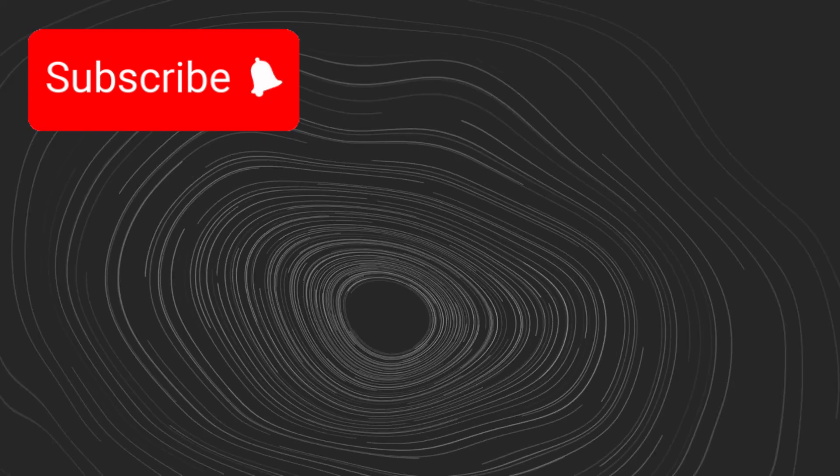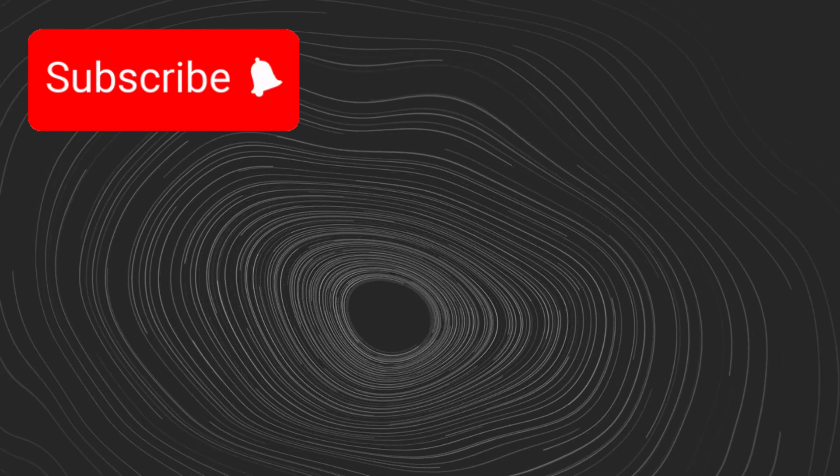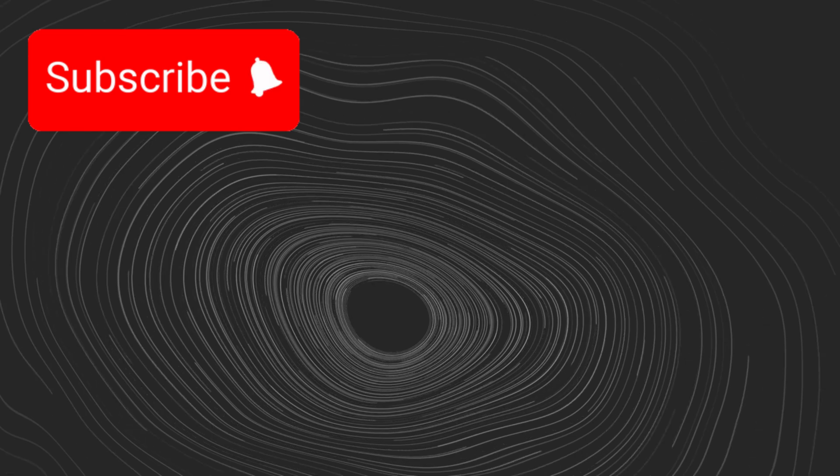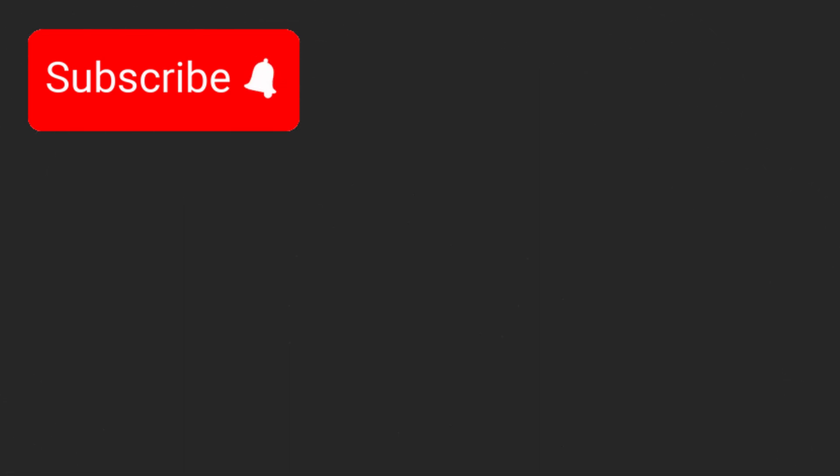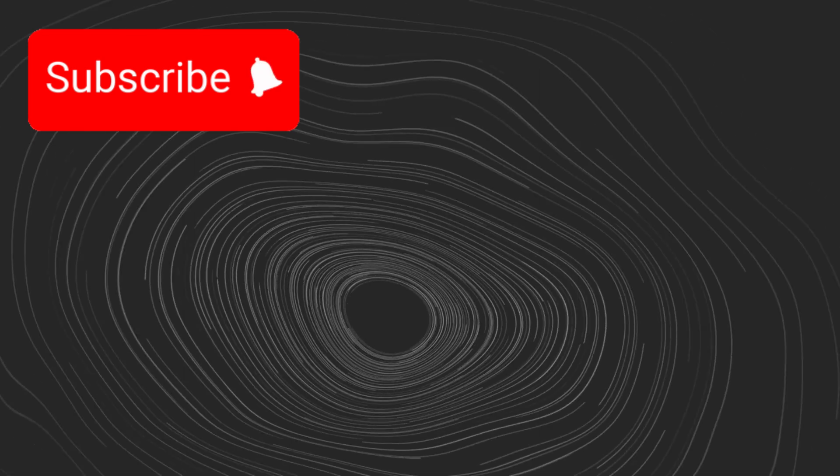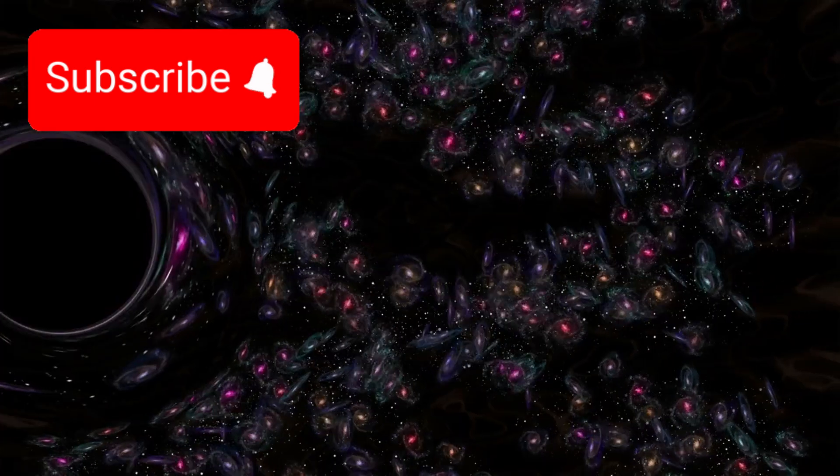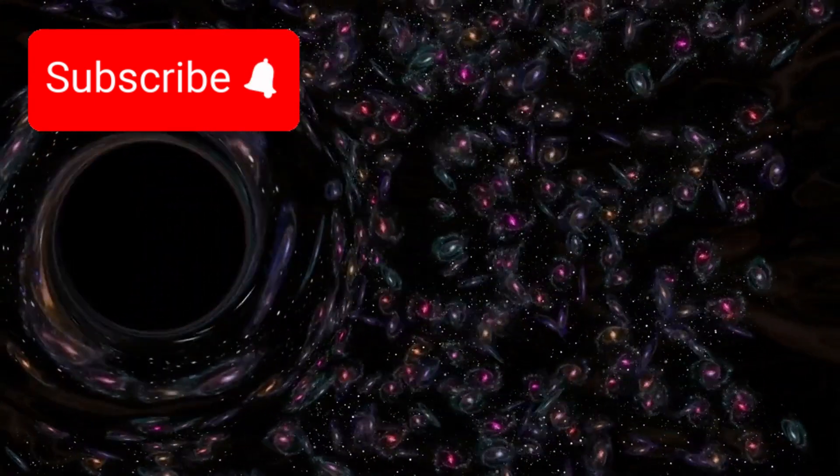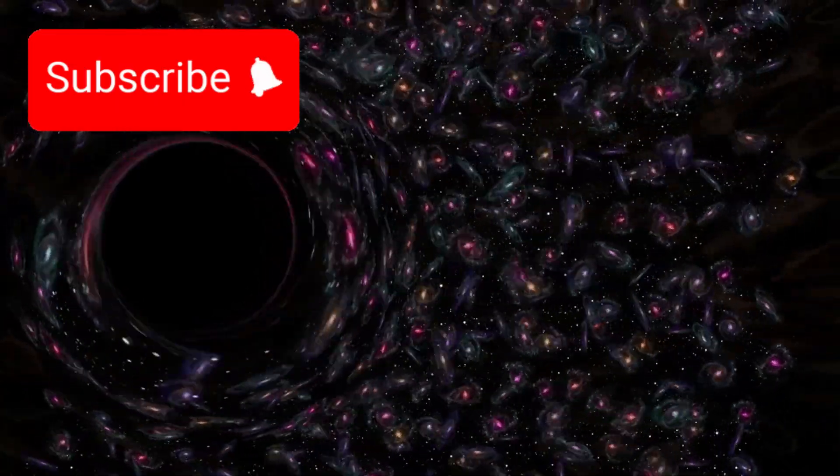Just weeks after spotting the earliest known galaxy in the universe, Webb has now observed something even more extraordinary: an enormous supermassive black hole being ejected from its own galaxy, traveling at an unimaginable speed of 4 million miles per hour. This finding is not only surprising, it's redefining what we thought we knew about the behavior of black holes and the early structure of galaxies.